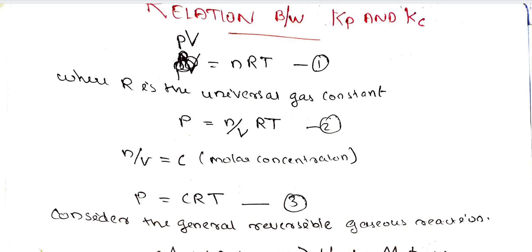From PV = nRT, if we divide the number of moles by volume, we get molar concentration. Molar concentration is n divided by V, which equals C. Therefore, substituting into the ideal gas equation gives us P = CRT, where C is the molar concentration.